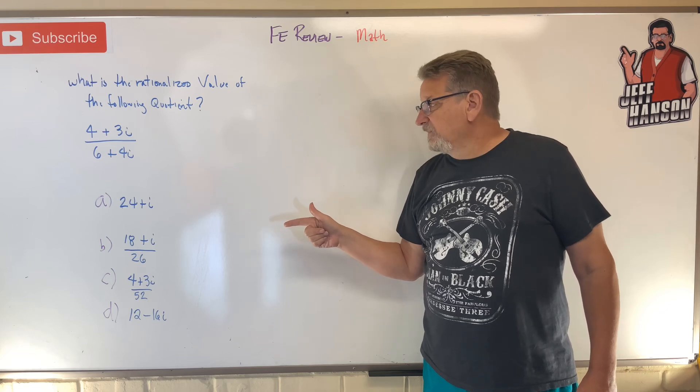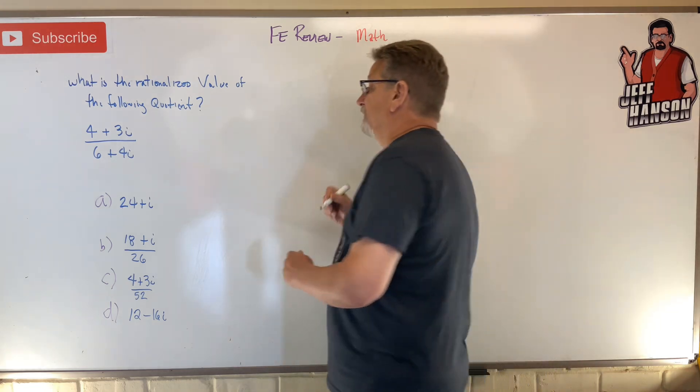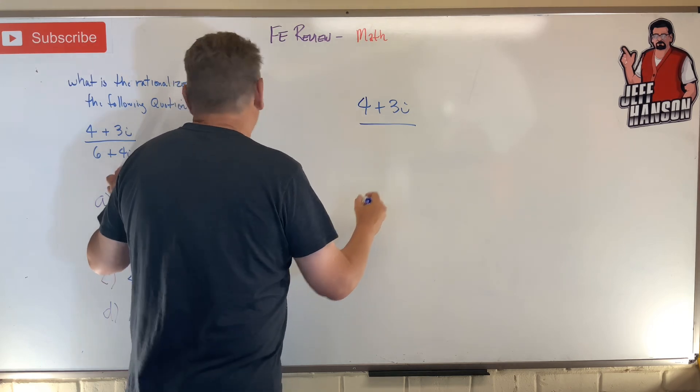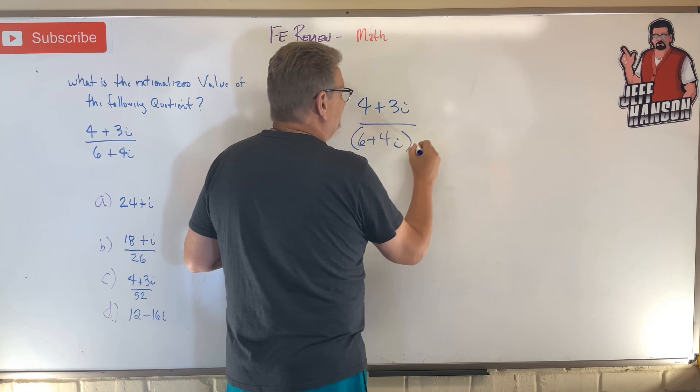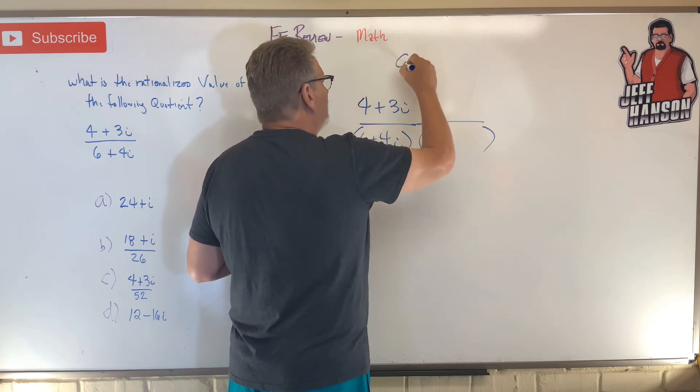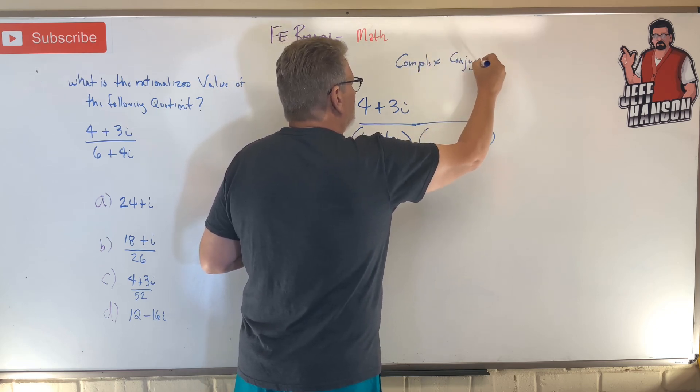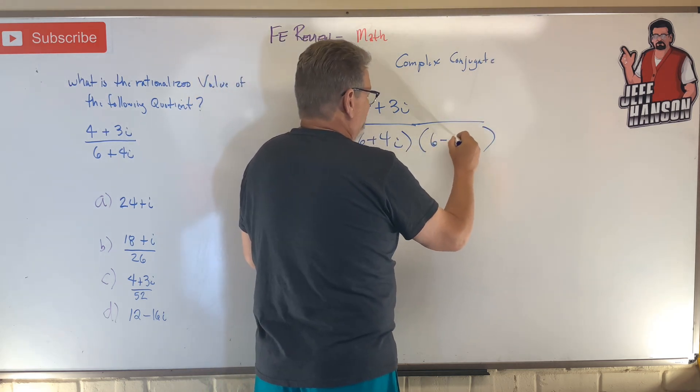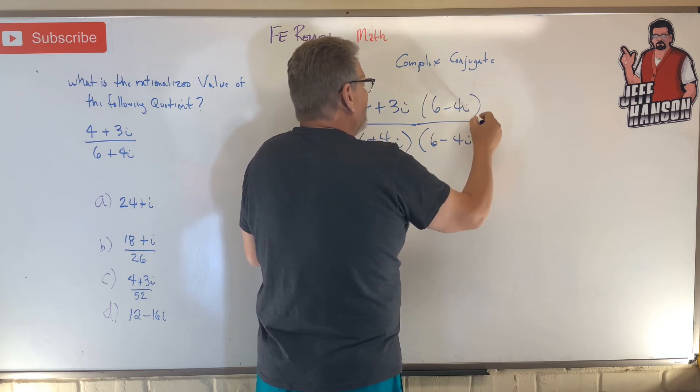All right, are you back? Now this one's really easy if you remember the trick. And the trick goes like this: 4 plus 3i divided by 6 plus 4i. What you want to do is take the bottom down here and multiply it by something called the complex conjugate. Basically, it's this except there's a minus, so 6 minus 4i.